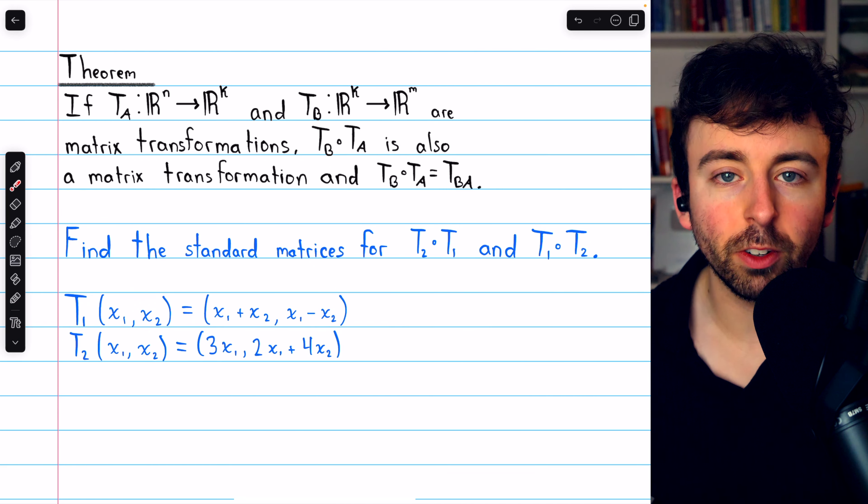Starting with T1, we will take the standard basis vectors from the domain R2 and put them through this transformation. T1 maps the standard basis vector (1,0) into the vector (1,1), and it maps the other standard basis vector (0,1) into the vector (1,-1).